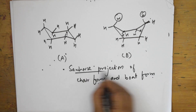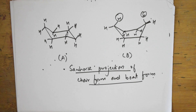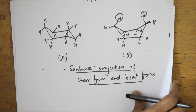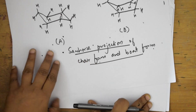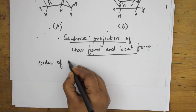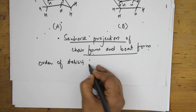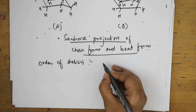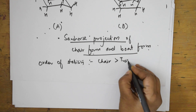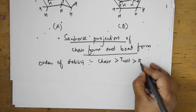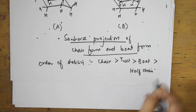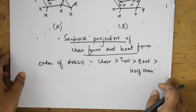Among the order of stability — if you are asked in a question about all the forms of cyclohexane — the chair form is the most stable, then the twist form, then boat form, then half chair. This is the order of stability of cyclohexane conformations.